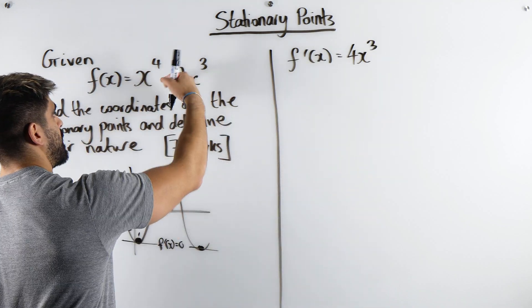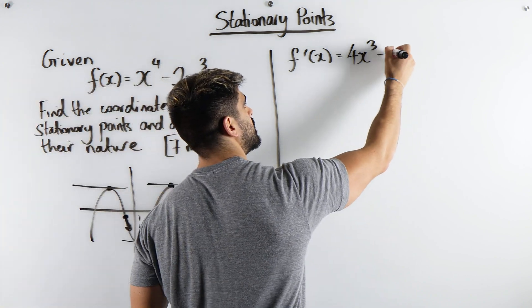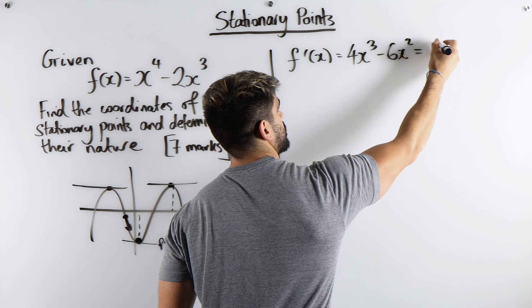So we get 4x cubed. And then bring down the power minus 6, because you're going to multiply it when you bring it down. So minus 6x squared. Make it equal to 0.